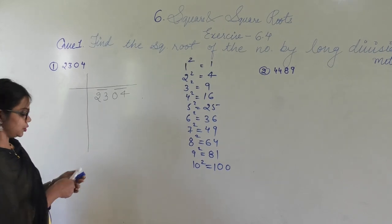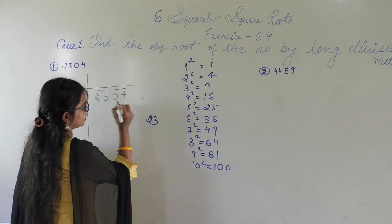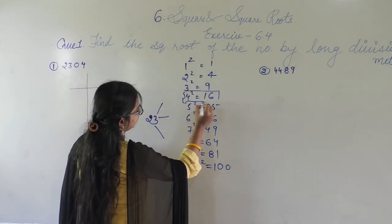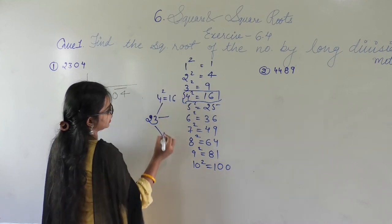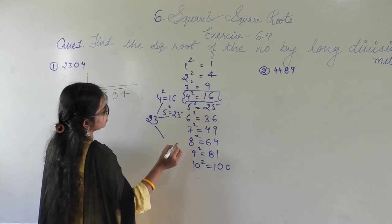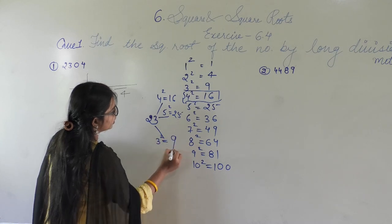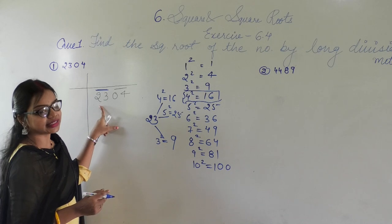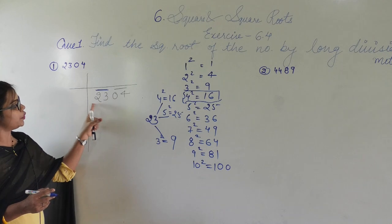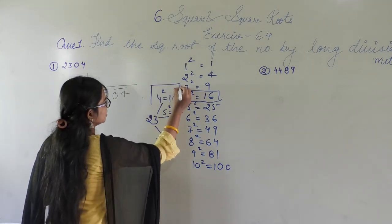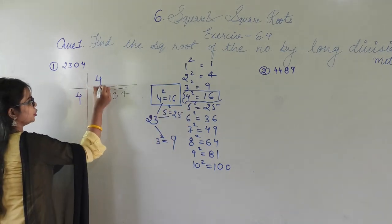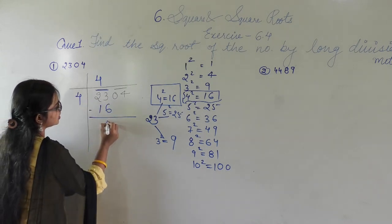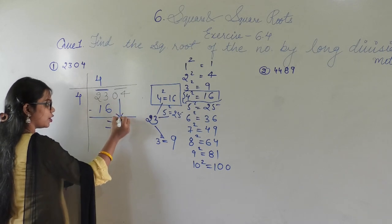For 23, let's check: 4²=16, 5²=25, 3²=9. Since 5² is greater than 23 and 4²=16 is less than 23, the nearest suitable number is 4. So I take 4, multiply 4×4=16, subtract from 23 to get 7. Bringing down the next pair 04, we get 704.